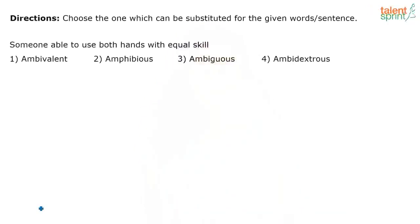There's a common prefix in most of the options. The first question is: someone able to use both hands with equal skill. My options are ambivalent, amphibious, ambiguous, and ambidextrous. Does anybody know what 'ambi' means as a prefix? Ambi is from Latin origin and it means 'both'. So we're looking at at least three words which have 'ambi' as a prefix.